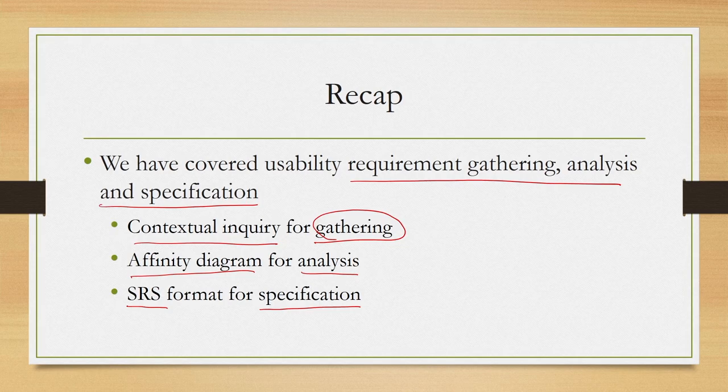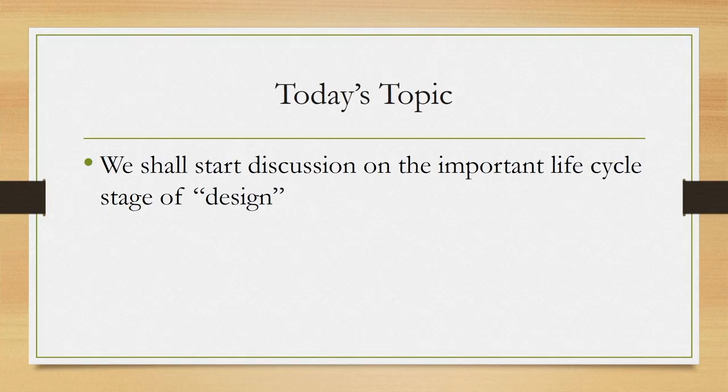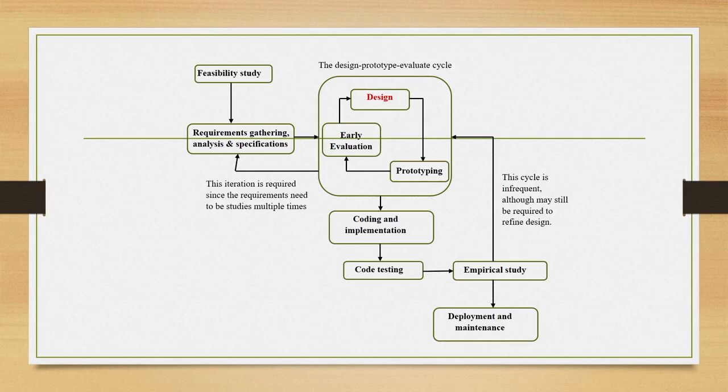So we covered the requirement gathering analysis and specification stage by separately learning what is meant by gathering, analysis, and specification. We explained everything in terms of a case study: a calendar application primarily to be used by students enrolled in higher educational institutes for academic purposes. In this lecture, we are going to talk about the design stage, which is one component in the design-prototype-evaluate cycle.